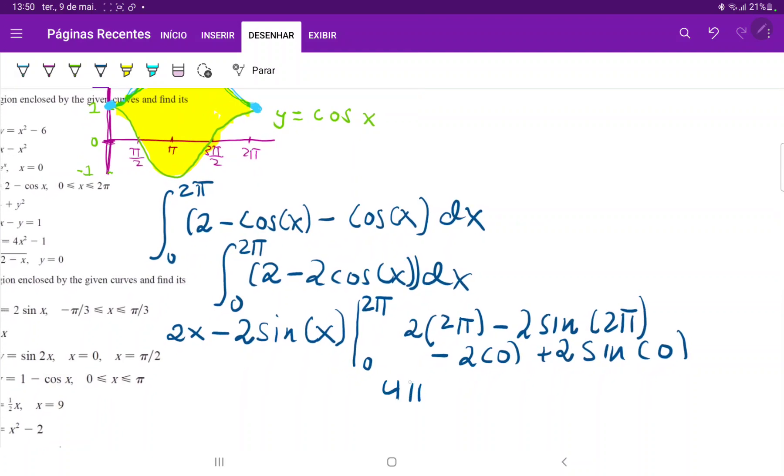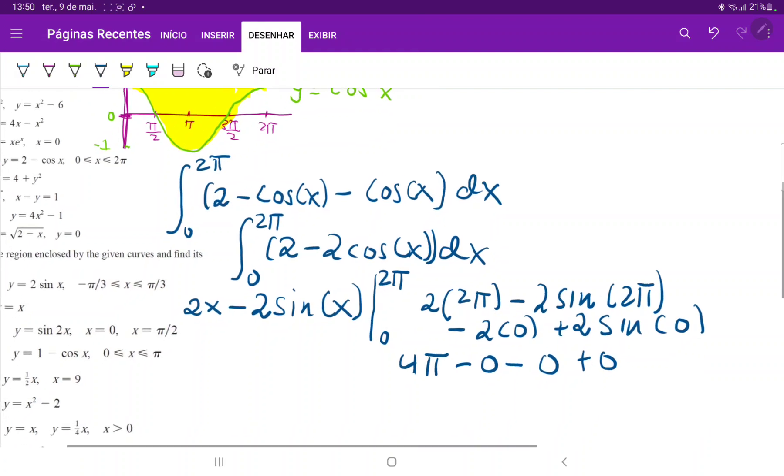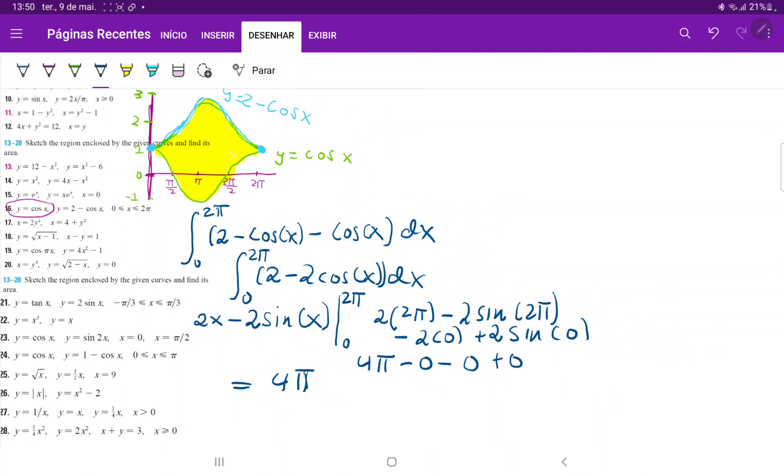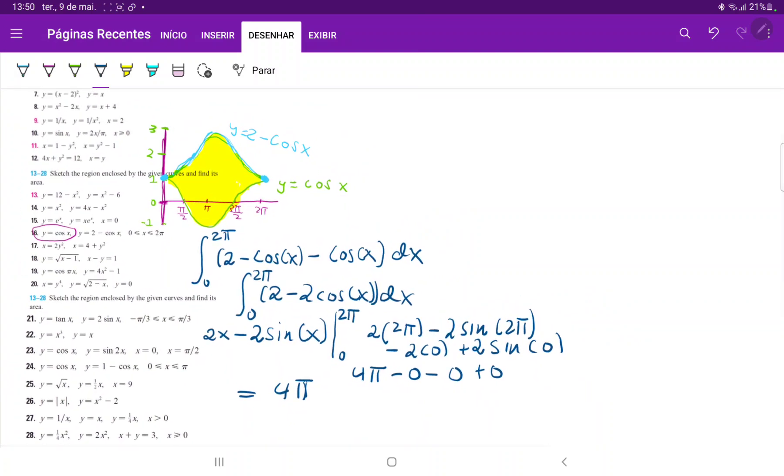This is 4 pi. Sine of 2 pi is equal to 0, so minus 0, minus 0, and then sine of 0 is also 0, so plus 0. So, to finish this off, this is just equal to 4 pi. And that should give us the area between these two curves.